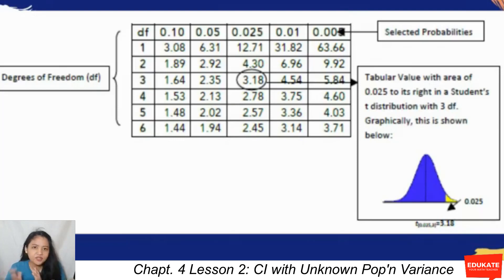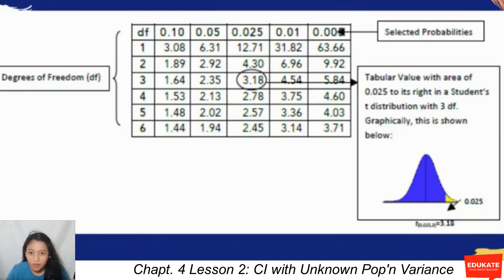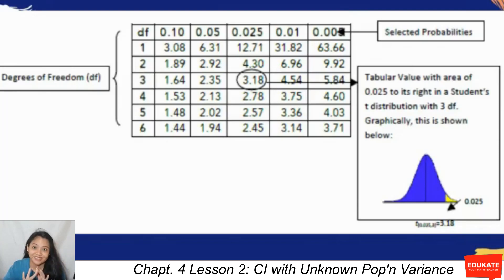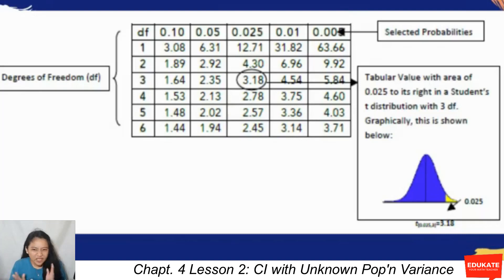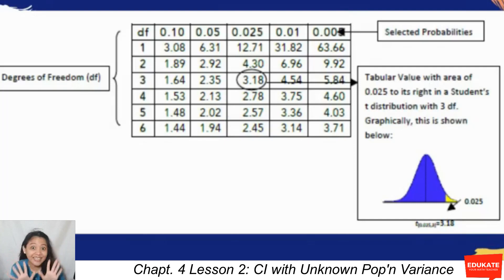Why is the degree of freedom n minus 1? The degree of freedom is the number of values that are free to vary in a dataset. For example, if you pick a set of numbers with a mean of 10 — say 9, 10, 11 — once the first two are chosen, the third number is fixed. So out of 10 data points, only 9 are free to vary; out of 30 samples, only 29 are free to vary.